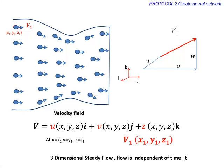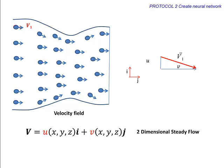If the velocity field has two components and is independent of time, it is called 2-dimensional steady flow.